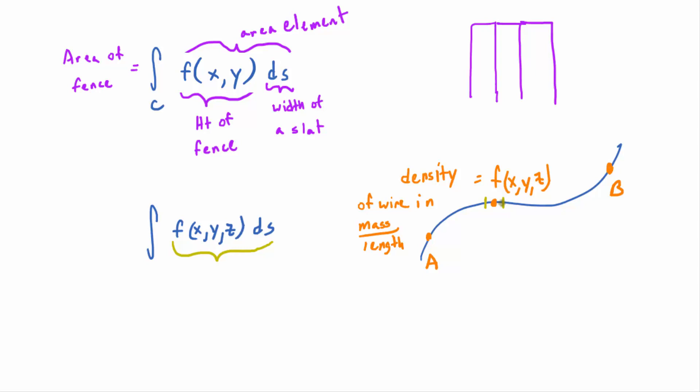And so what happens when you add them all together? You get the total mass. So f times ds would be your mass element. And then you add them all up. That would be total mass.